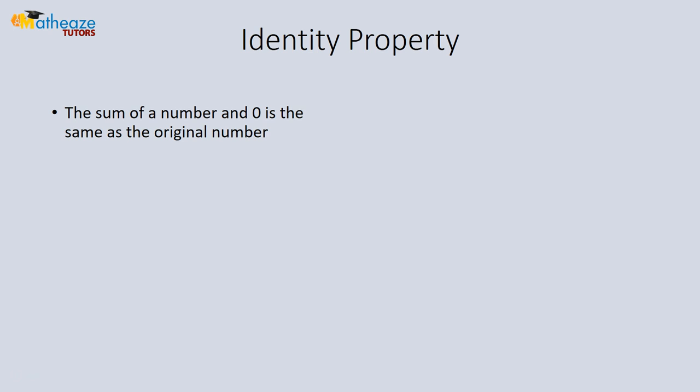Finally, the identity property tells us that if you add any number to 0, you get the same as the original number. For example: 1 plus 0 gives 1, 12 plus 0 gives 12, and 125 plus 0 gives 125. These are the main properties we'll use when dealing with addition.